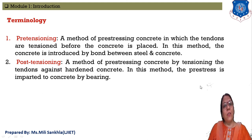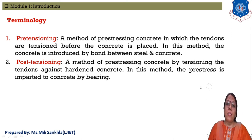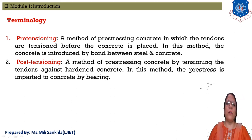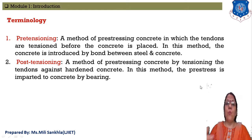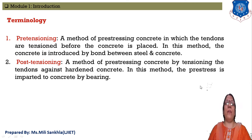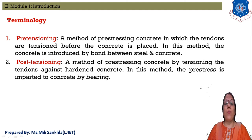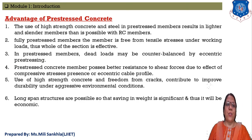As a terminology recap: pre-tensioning means the method of prestressing in which tendons are stretched first and then concrete is poured. After the concrete hardens, we cut the tendons and stress is transferred from one material to another. In post-tensioning, we pour concrete first and then stretch the tendons, transferring stress from one material to another.